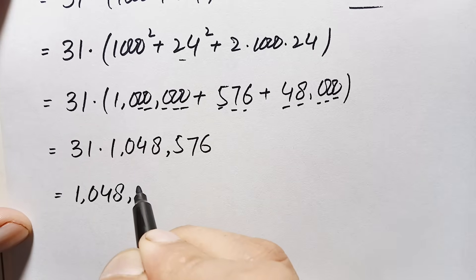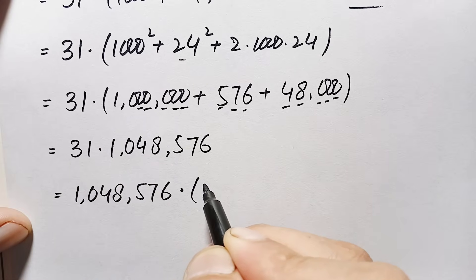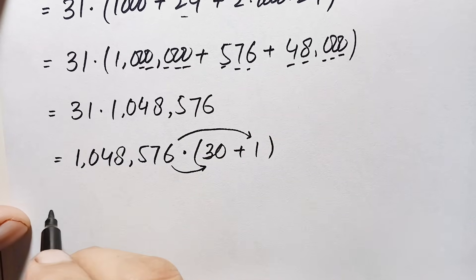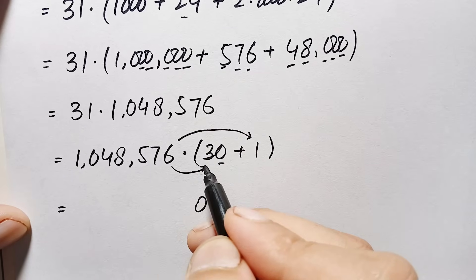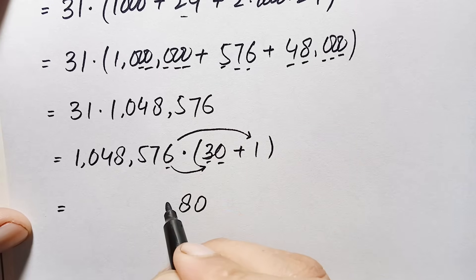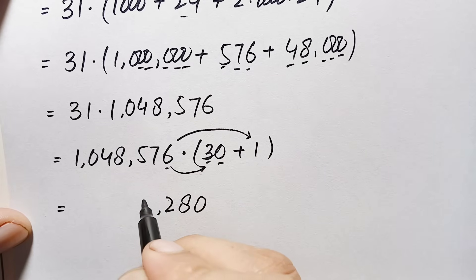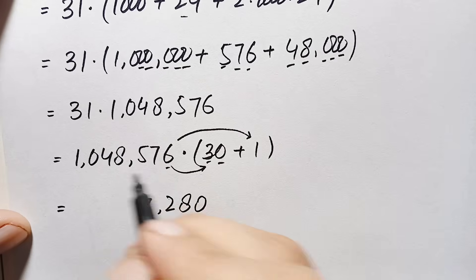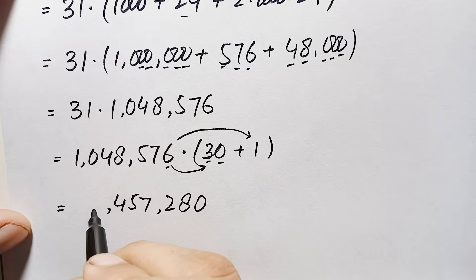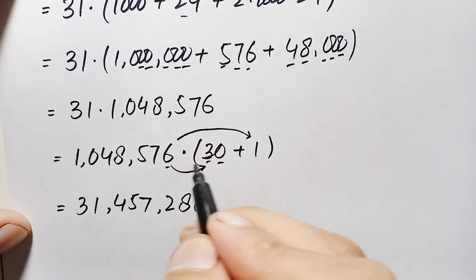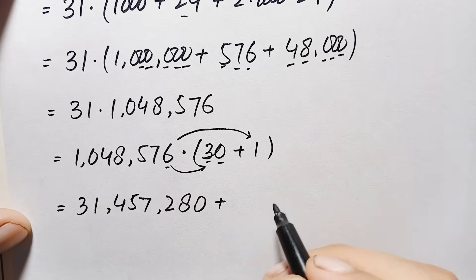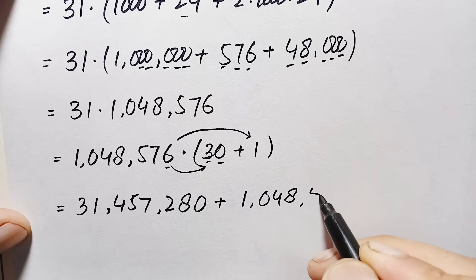We write 1,048,576 times 31, and we split 31 as 30 plus 1. First we multiply 1,048,576 by 30: multiplying by 3 gives us — 3 times 6 is 18, carry 1; 3 times 7 is 21 plus 1 is 22, carry 2; 3 times 5 is 15 plus 2 is 17, carry 1; 3 times 8 is 24 plus 1 is 25, carry 2; 3 times 4 is 12 plus 2 is 14, carry 1; 3 times 0 is 0 plus 1 is 1; 3 times 1 is 3. So 1,048,576 times 30 equals 31,457,280. Multiplying by 1 gives 1,048,576.